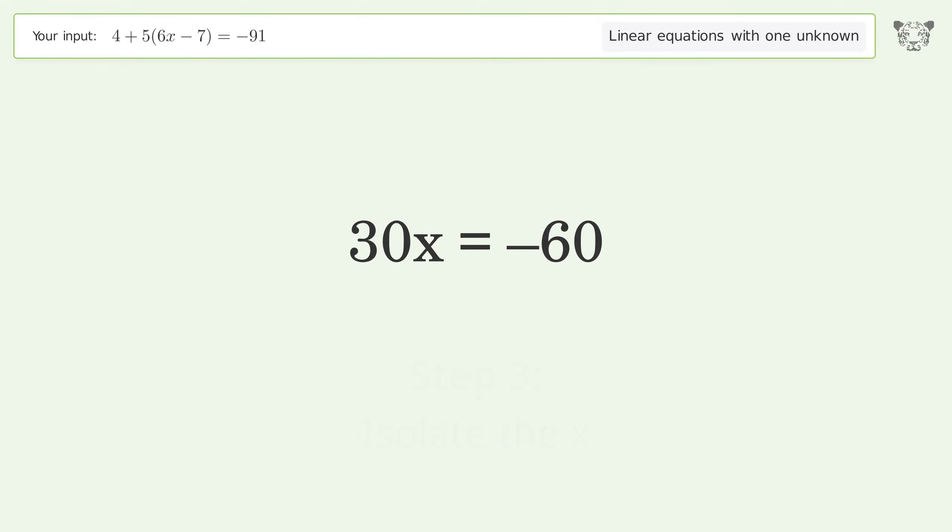Isolate the x. Divide both sides by 30. Simplify the fraction.